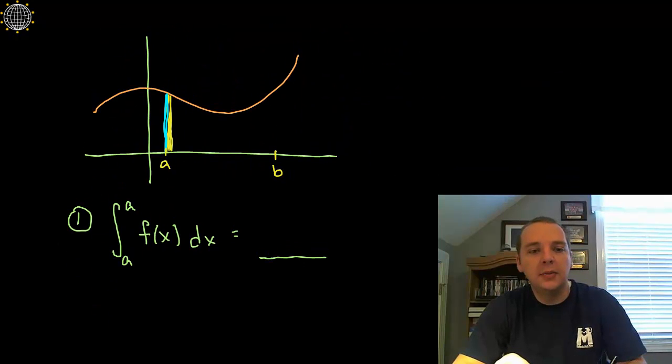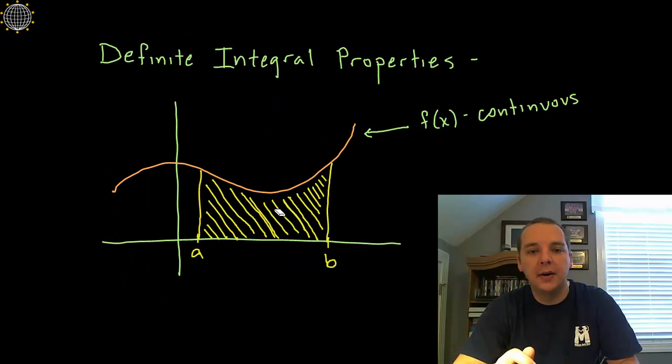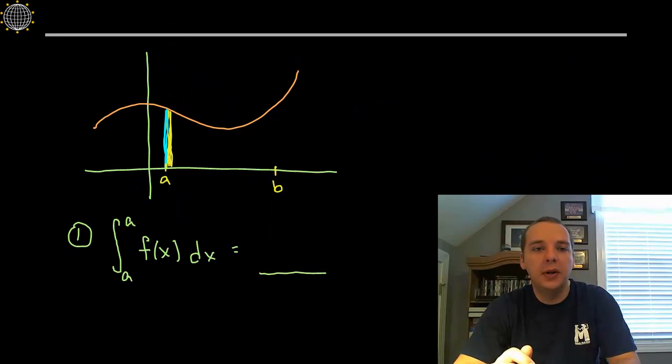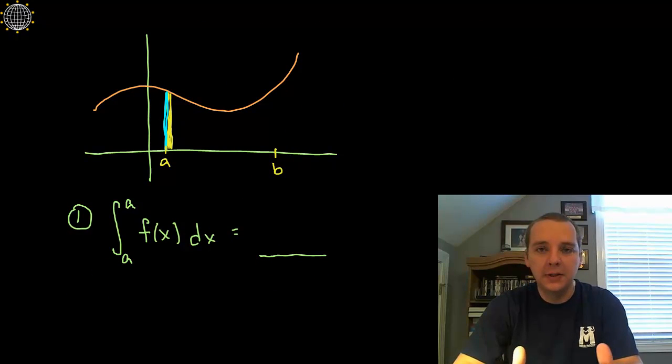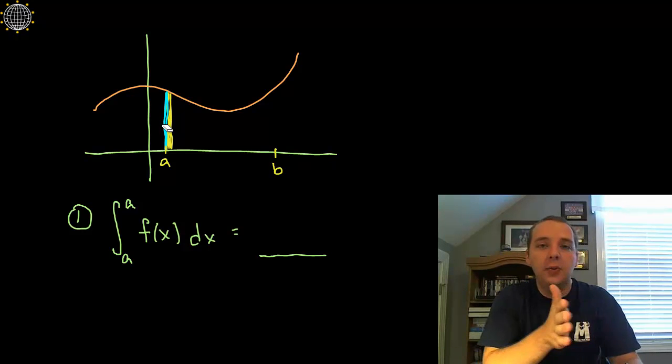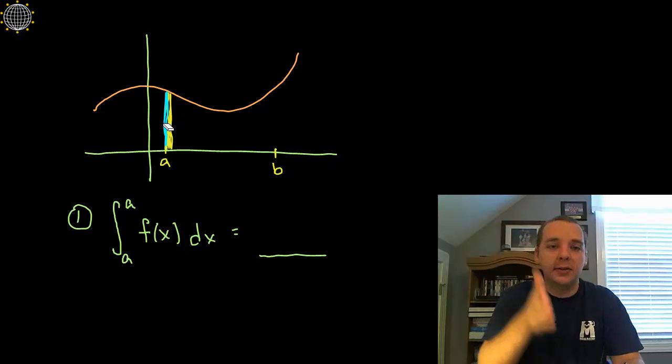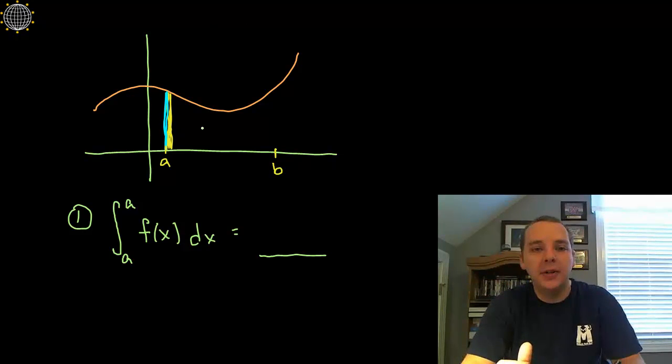The first property says if you're going to take a definite integral from A to A—normally we go from A to B, like in this last picture here, we're trying to find the area under this curve from A to B. But if your starting point and ending point is the same, just a little common sense will tell you what this answer is. If you're starting at A and then you haven't accumulated any area past A, in fact you're still stopping at A, then how much area have we accumulated? Well, the answer is obviously 0.